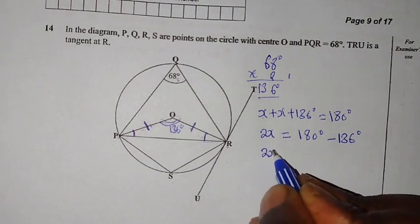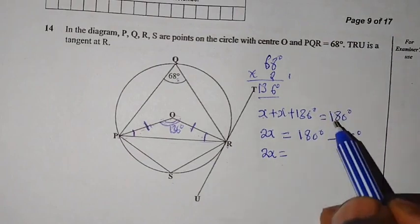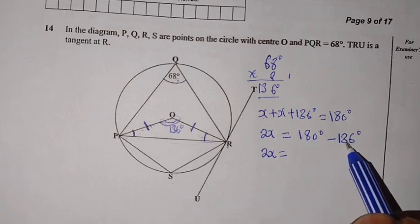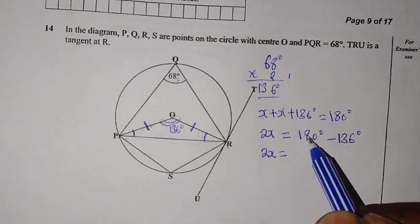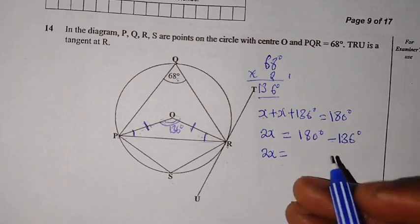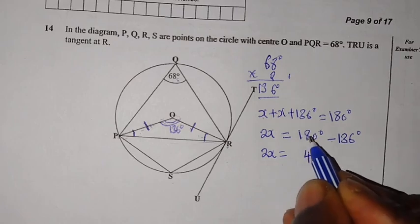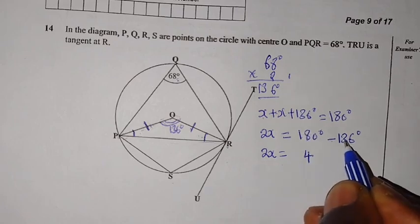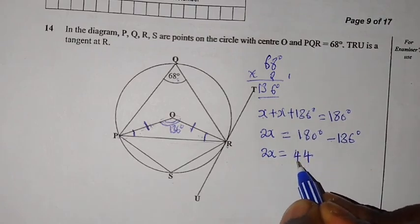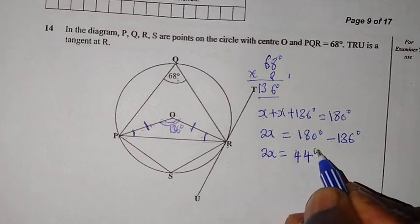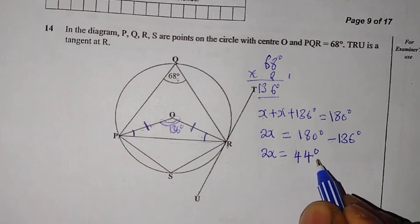Equal to 180 degrees minus 136 degrees. So we are going to have 2X is equal to, so when we subtract, 180 minus 136. So 0 take away 6 is can't. You borrow a 1 from 8. This will be 10 minus 6 to give us a 4. So here we remain with a 7 minus 3 to give us a 4. 1 minus 1 is a 0. So this will give us 44 degrees.